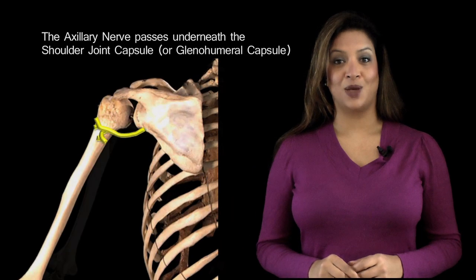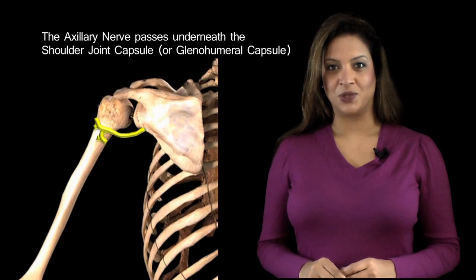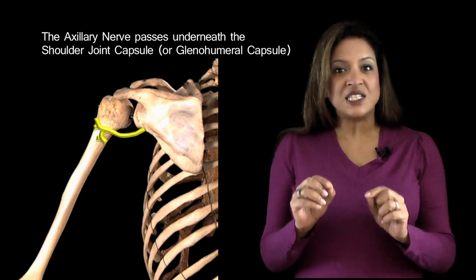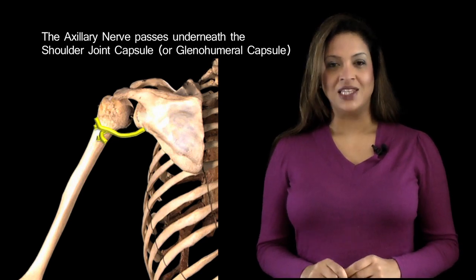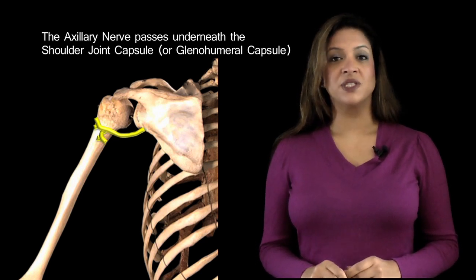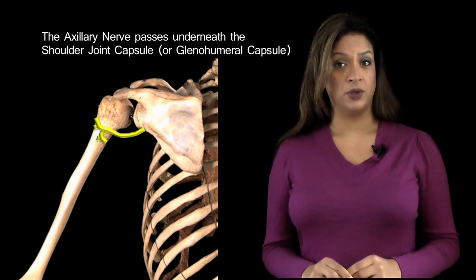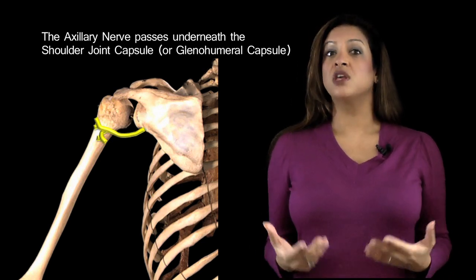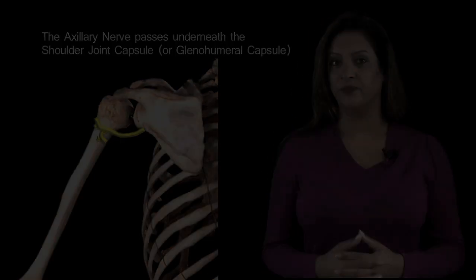At the lower level of the subscapularis, the axillary nerve dives backwards and passes underneath the shoulder joint capsule — the glenohumeral capsule. It is this intimate relationship with the capsule that makes the nerve particularly vulnerable if the shoulder dislocates or if there is a fracture to the upper part of the humerus.